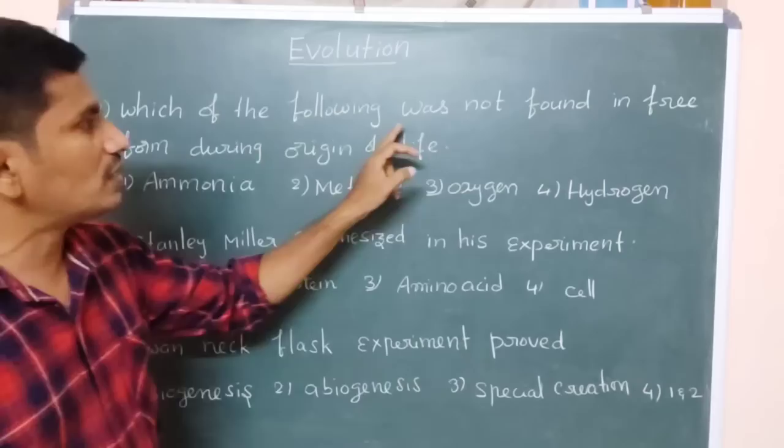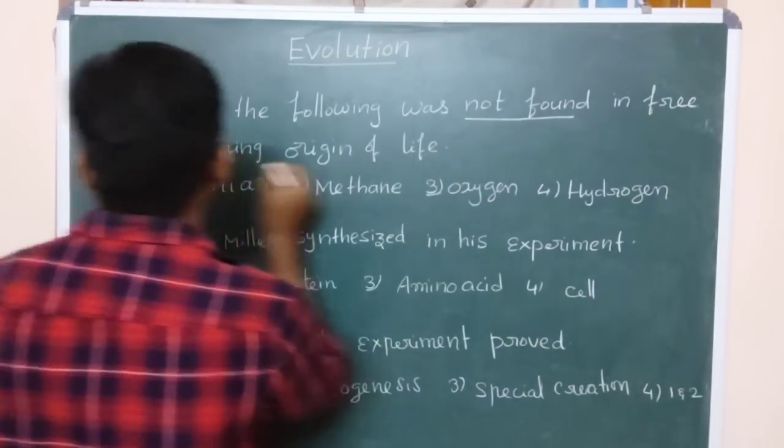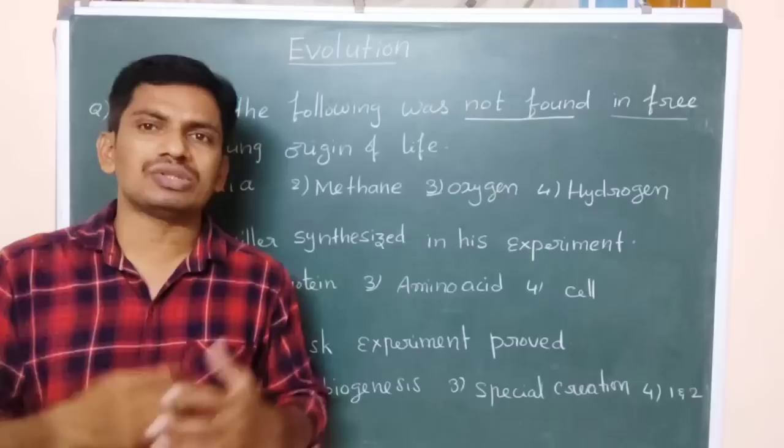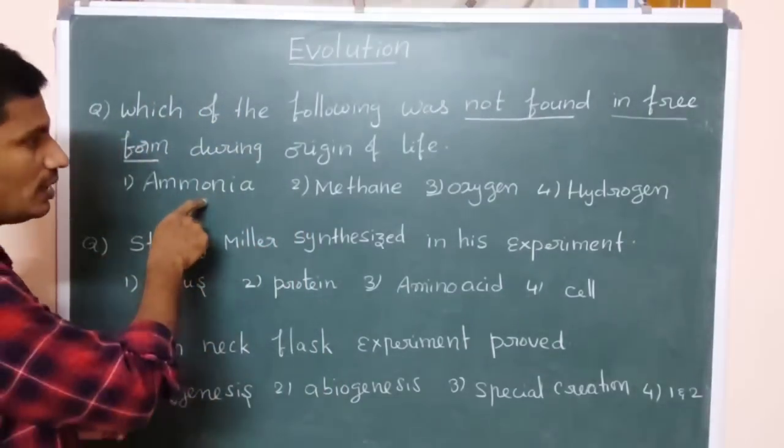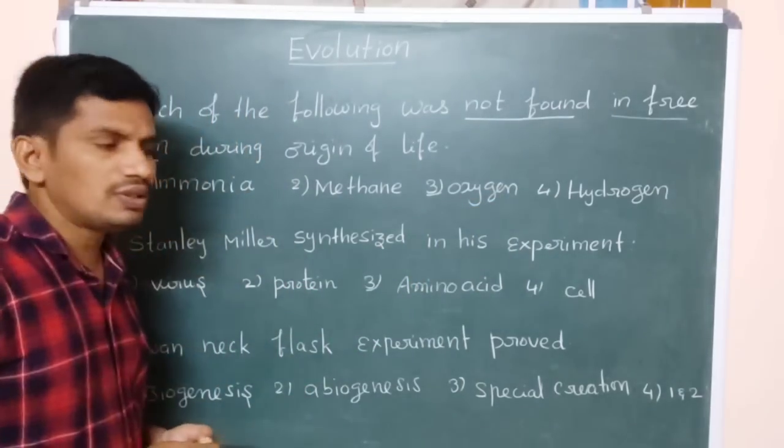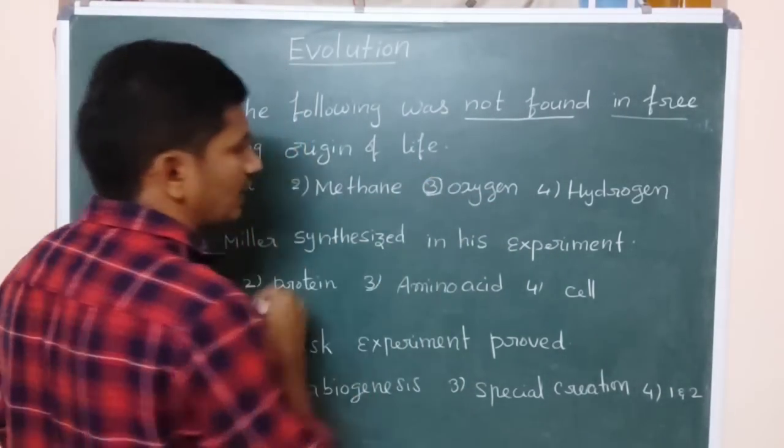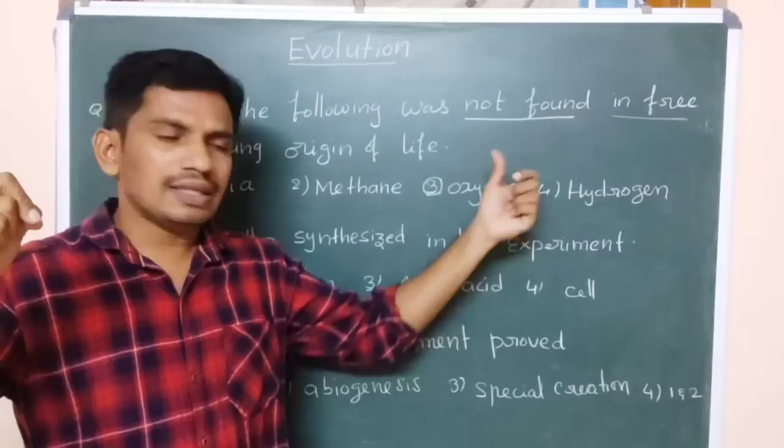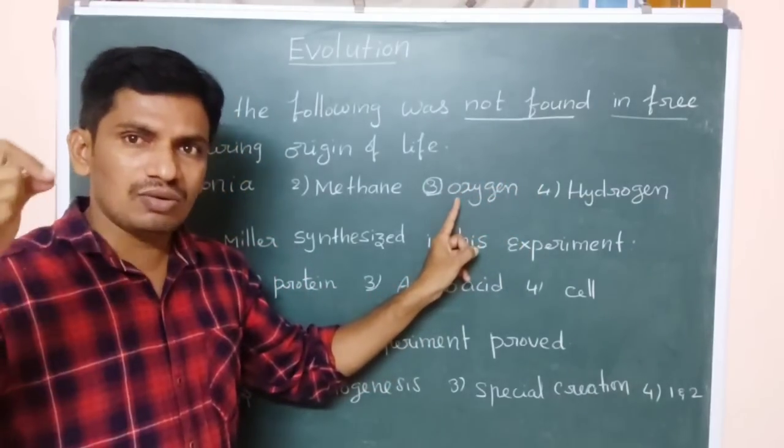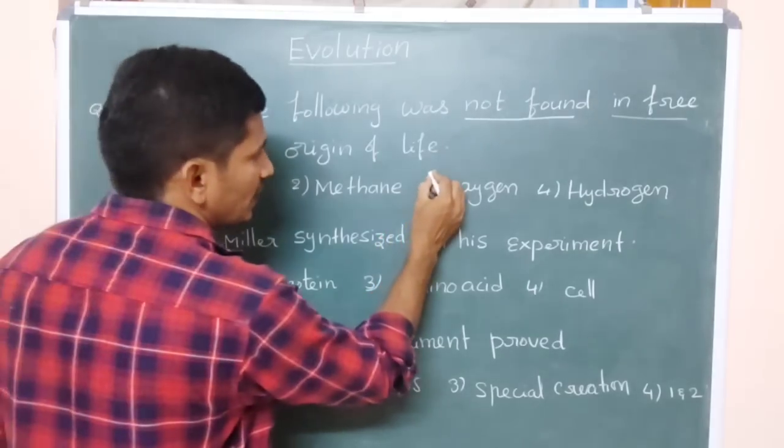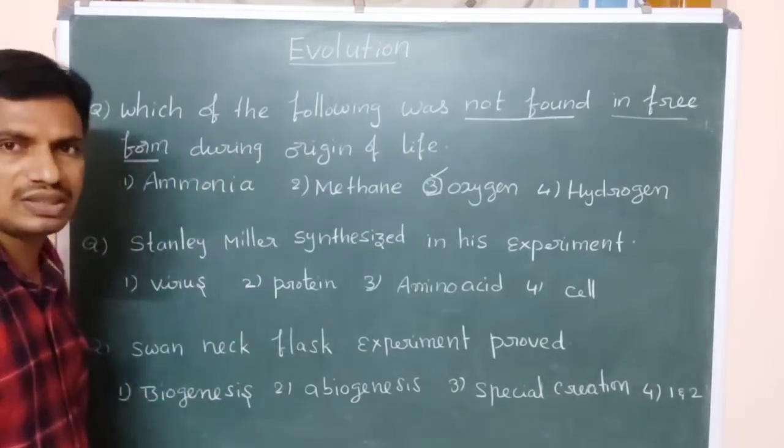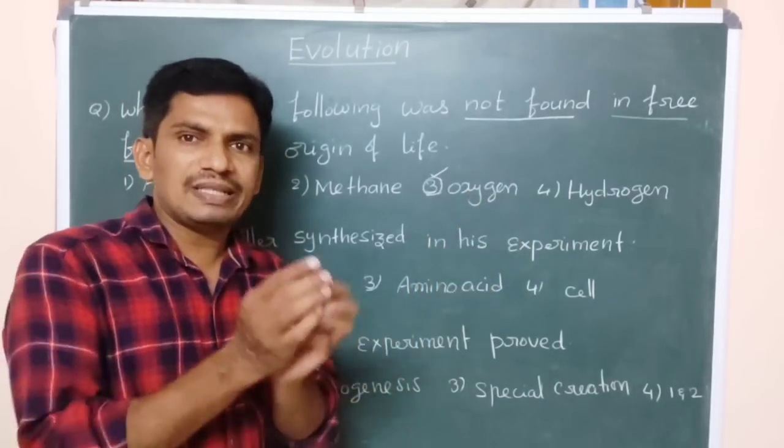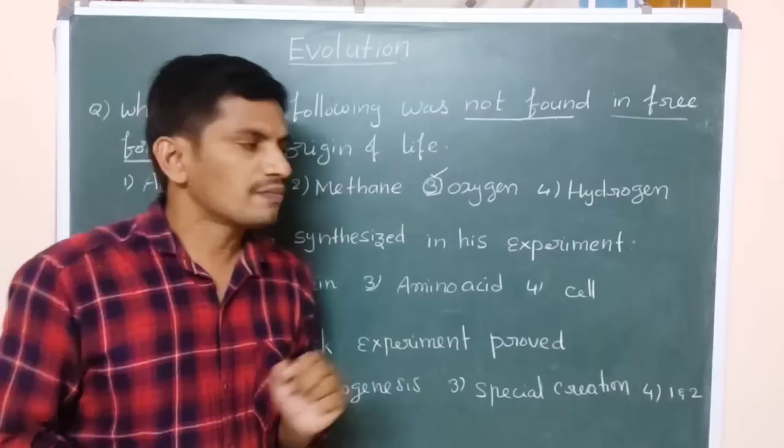At that time here ammonia and methane, oxygen, hydrogen, these are the four options. Which of the following was not found in free form? You know that Miller experiment also used in the condenser here ammonia and methane and hydrogen. So here oxygen not available, it was not available in the free form. After splitting of hydrogen molecule water molecule, then oxygen was formed.